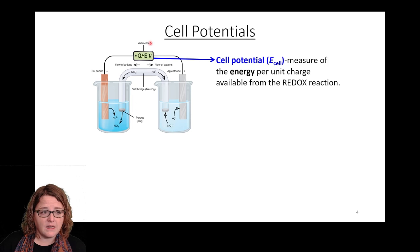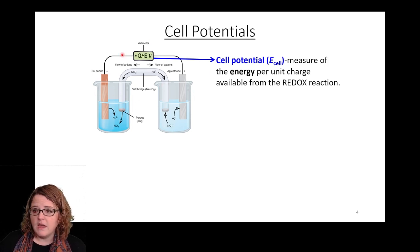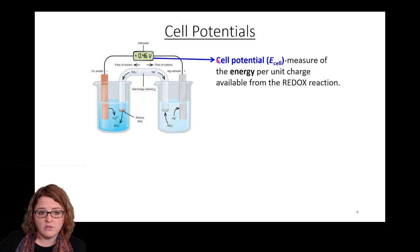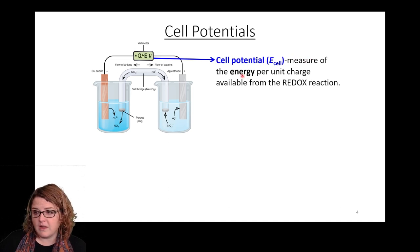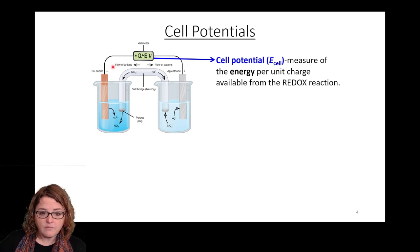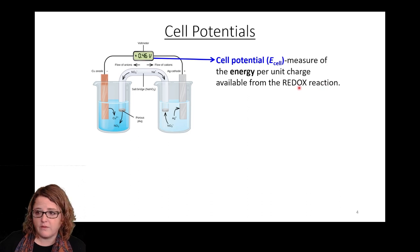Just to recap what we did last time: if I took two half cells — this is a very specific copper-silver half cell — and I hooked up a voltmeter to those half cells, what I would notice is that my voltmeter reads a voltage. That voltage is what we refer to as the cell potential or the electrical potential, and this is ultimately a measure of how much energy we can get per unit charge, per electron essentially, from a spontaneous movement of electrons from that redox reaction.